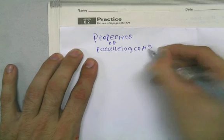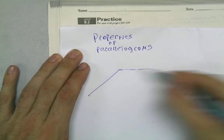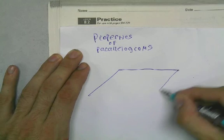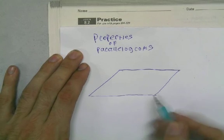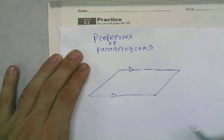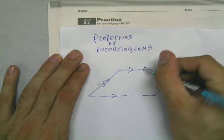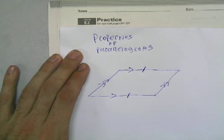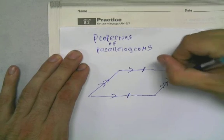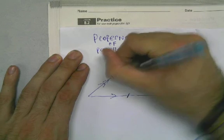Alright, now a parallelogram is a quadrilateral where opposite sides are parallel, and then this side is parallel to this side. It also means that this side is congruent to this side, and then this side is going to be congruent to that side.